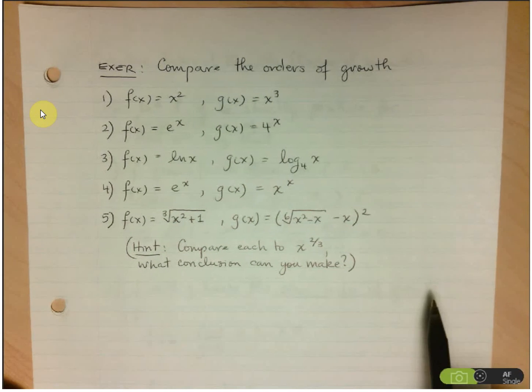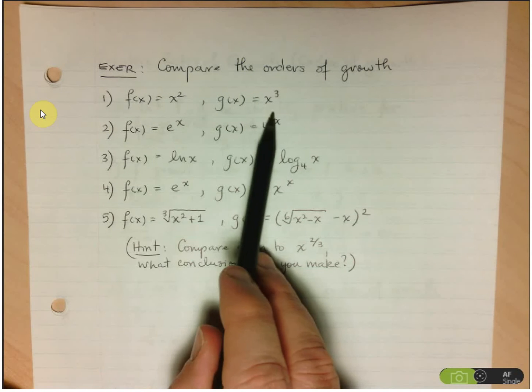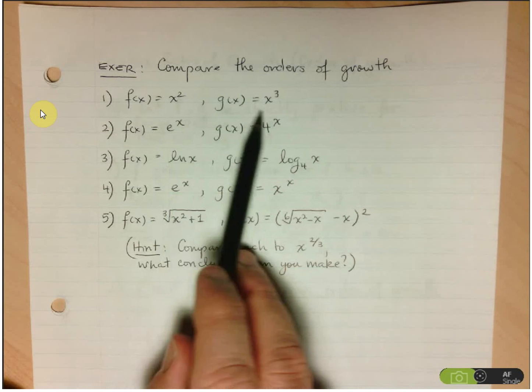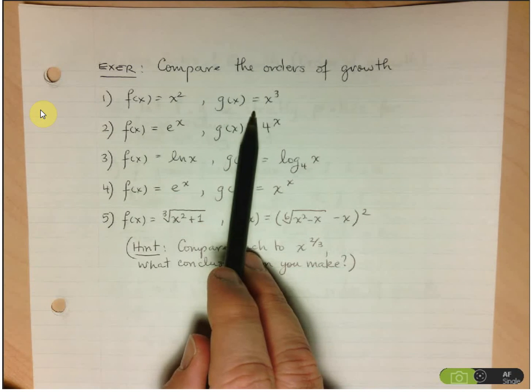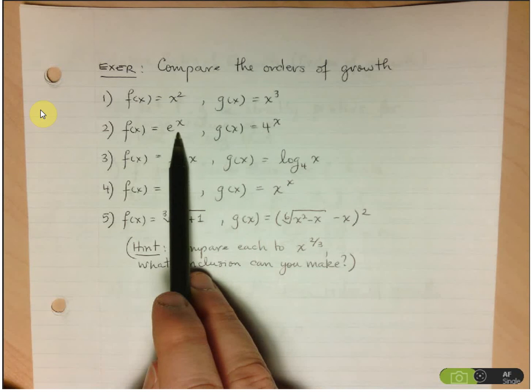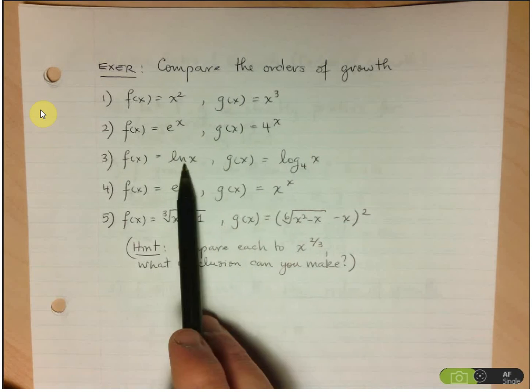So, not surprisingly here, we're comparing a quadratic and a cubic. I think we probably know where that's going. But what about two exponential functions? Do we expect them to have the same order of growth, or different orders of growth?